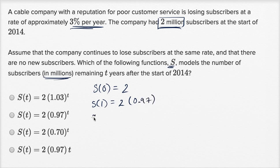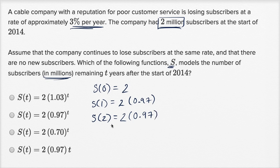Now what happens at T equals two, after two years? Well, they started with two million. In one year, they were only able to retain 97 percent. And then another year goes by, they're only going to retain 97 percent of what they had the year before — so another 97 percent.